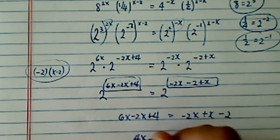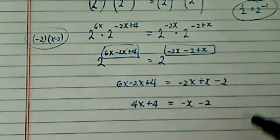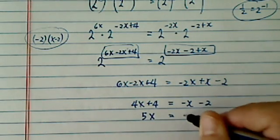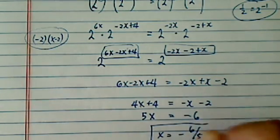Let's simplify. 4x plus 4 equals minus x minus 2. Move this over, and 5x equals minus 6. So the final answer is x equals minus 6 over 5.